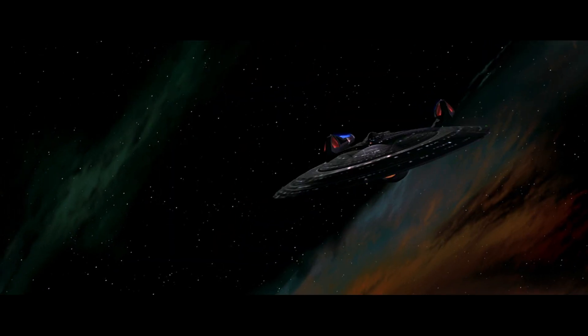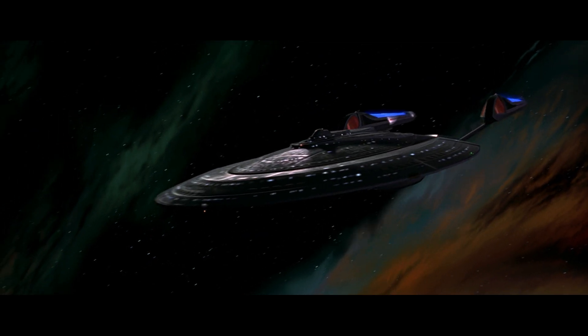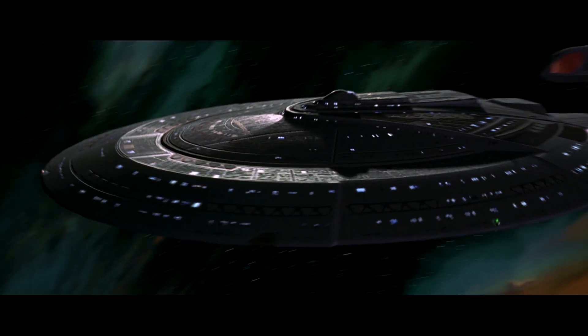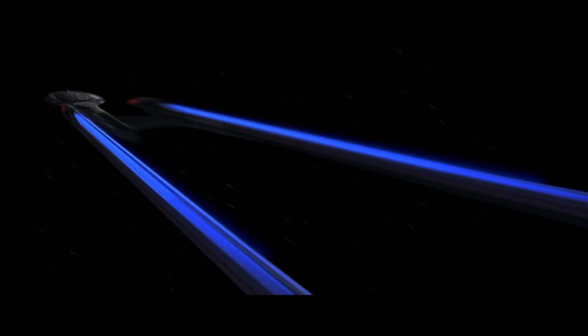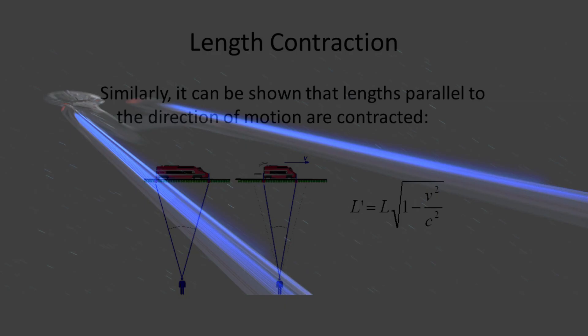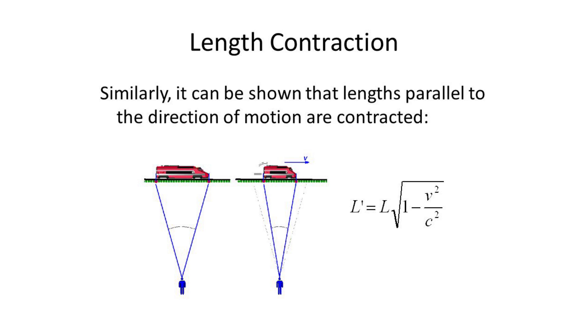Star Trek is largely responsible for imprinting upon us that it looks really cool when a starship stretches longer as it warps away. But did you know that the length of an object is supposed to decrease as V approaches C?